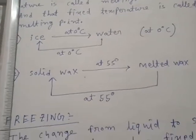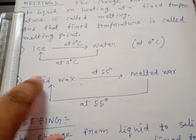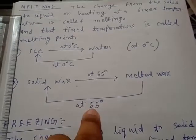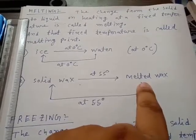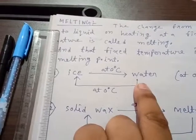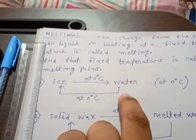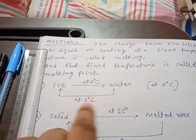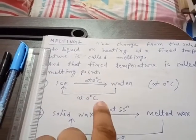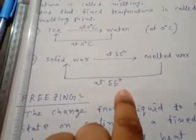Observe here — when melted wax, which is a liquid, converts into solid wax at 55 degrees centigrade when heat is absorbed from it. Similarly, when heat is absorbed from water, it converts into ice at 0 degrees centigrade. So 0 degrees centigrade is the freezing point of water, and 55 degrees centigrade is the freezing point of melted wax.